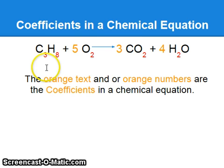Coefficients in a chemical equation. The orange text and/or orange numbers are the coefficients. For example, 5, 3, and 4 are coefficients in this equation.